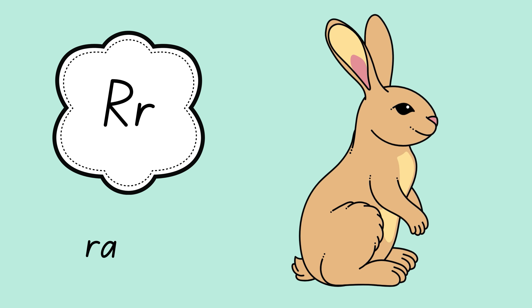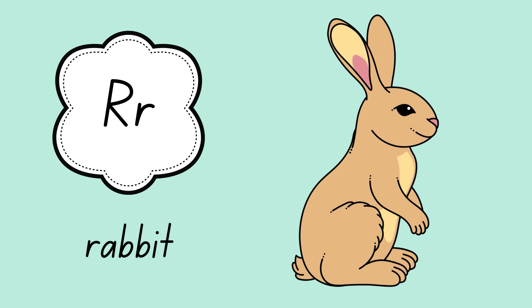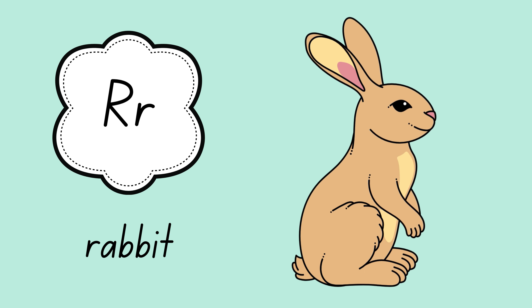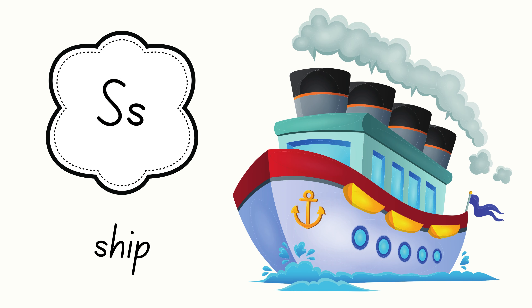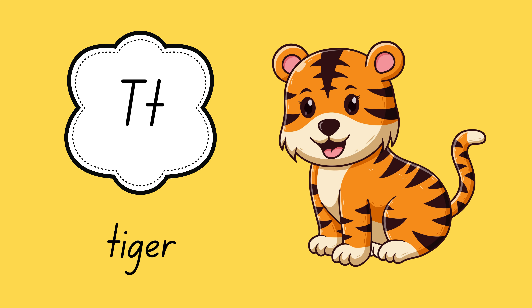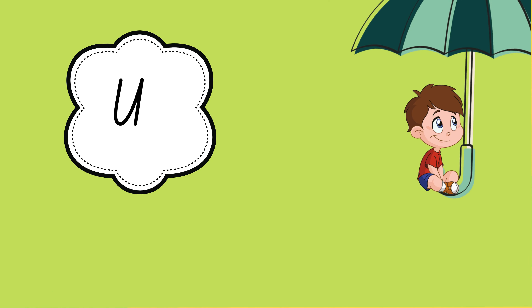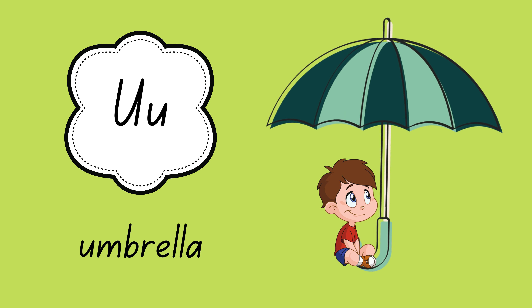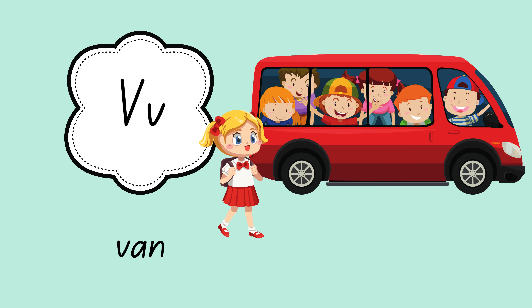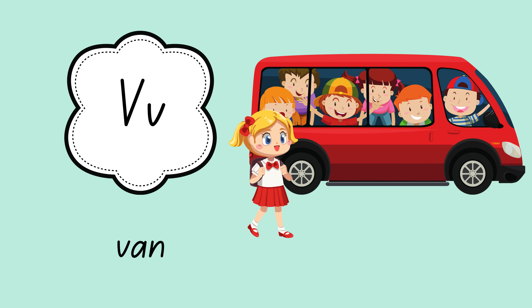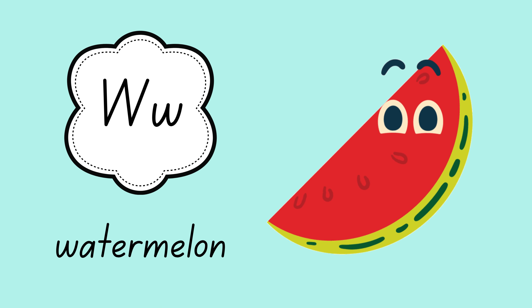R for rabbit. S for ship. T for tiger. U for umbrella. W for watermelon.